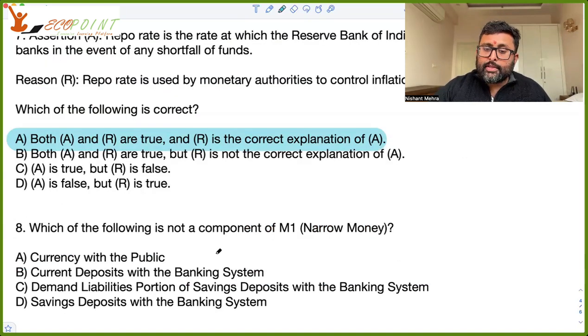Which of the following is not the component of M1, narrow money? See, savings deposit with the banking system entirely is not the part of narrow money. Out of the savings deposit, only that portion, which is demand liabilities portion, that is the part of narrow money. That is the part of M1. So savings deposits with the banking system is not entirely the part of M1.